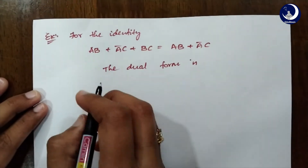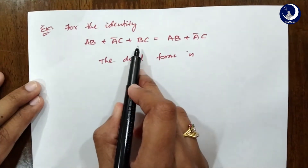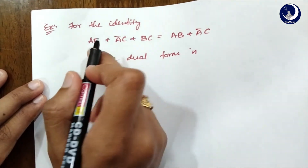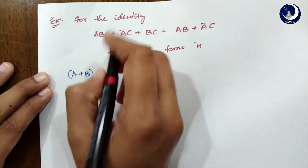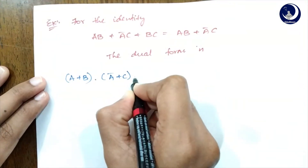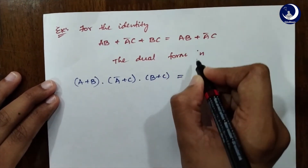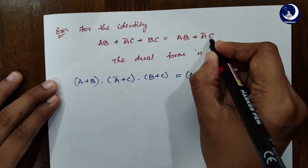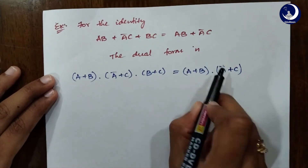For example, in the given equation, if you find any Ā or B̄, you are not changing those. We are only concerned with changing OR and AND and ones and zeros. Now let's look at an example. Given the identity AB + ĀC + BC = AB + ĀC, we need to form the dual. Each dot becomes plus and each plus becomes dot: (A+B)·(Ā+C)·(B+C) = (A+B)·(Ā+C). Note that Ā remains unchanged.